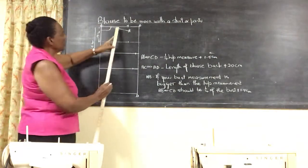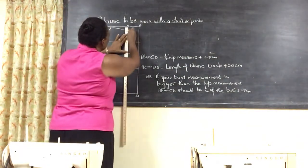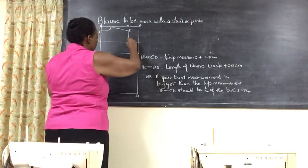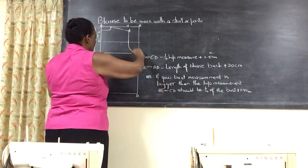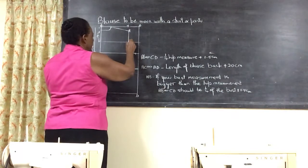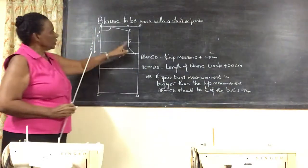Then you join point K to J to E to create the armhole. Remember, you have to do this freehand. This would be point J here. So you get your armhole.